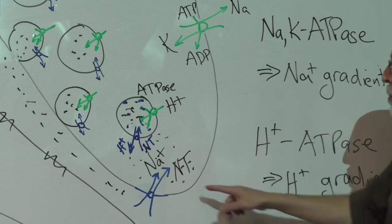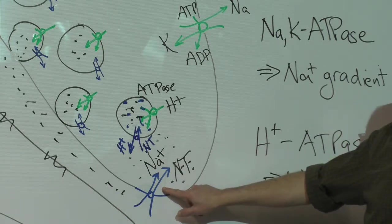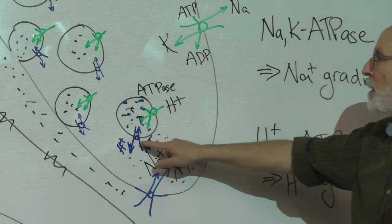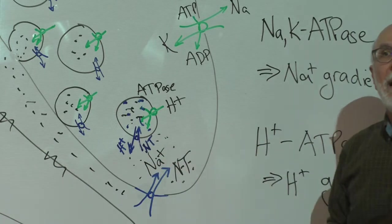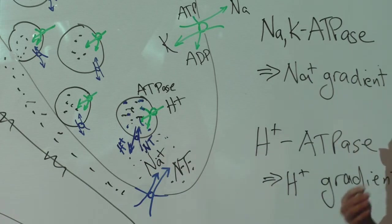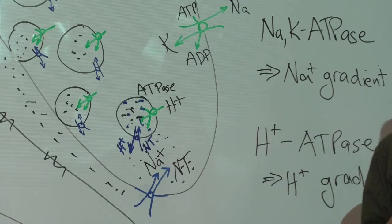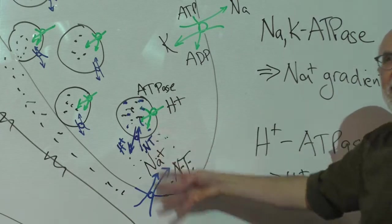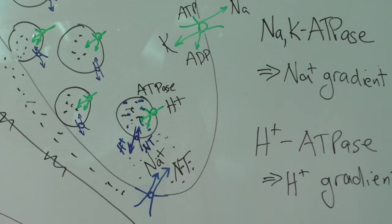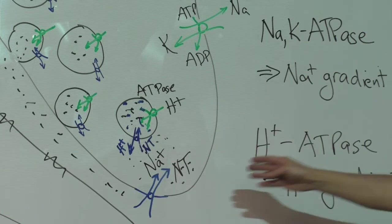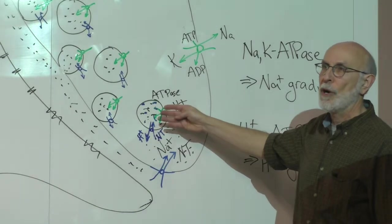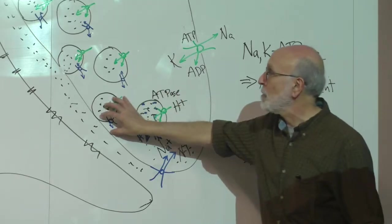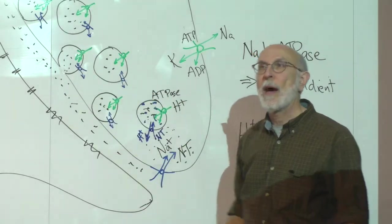We can talk about the glutamate sodium excitatory neurotransmitter transporter, and the proton-glutamate exchanger. But it's not important to go through all the variations for every neurotransmitter. The overarching concept for all of them is: sodium-dependent uptake of neurotransmitter into the cytosol, then proton-exchange transport into the lumen of the vesicles, then vesicle transport, and then vesicle fusion and release.